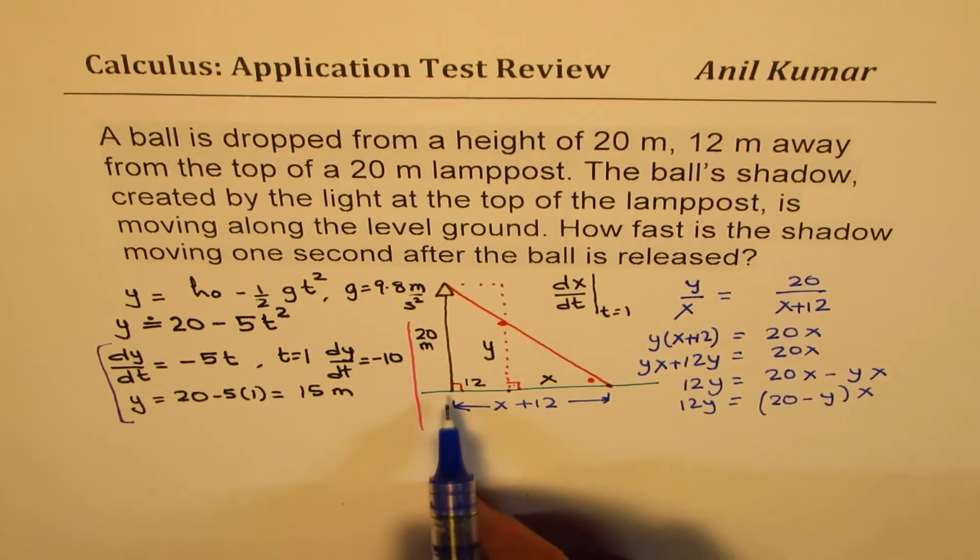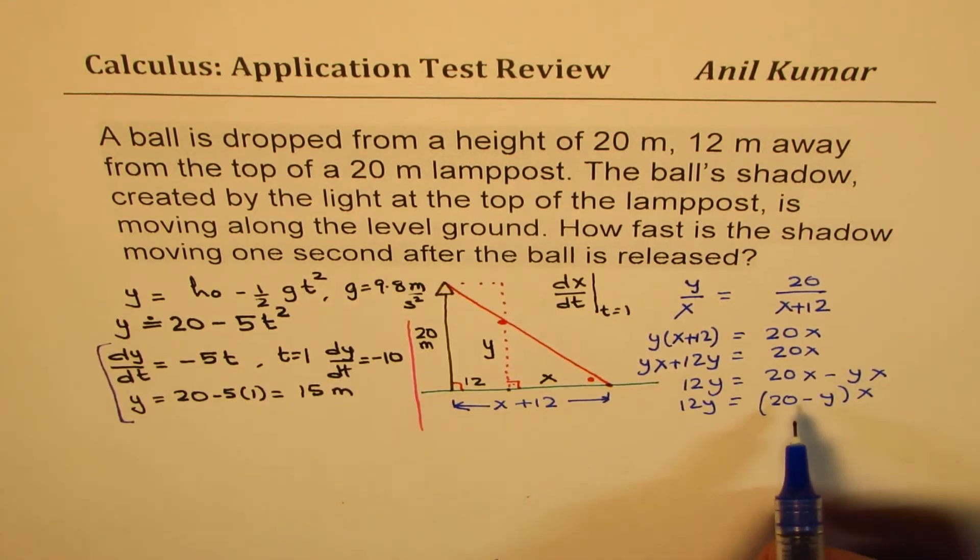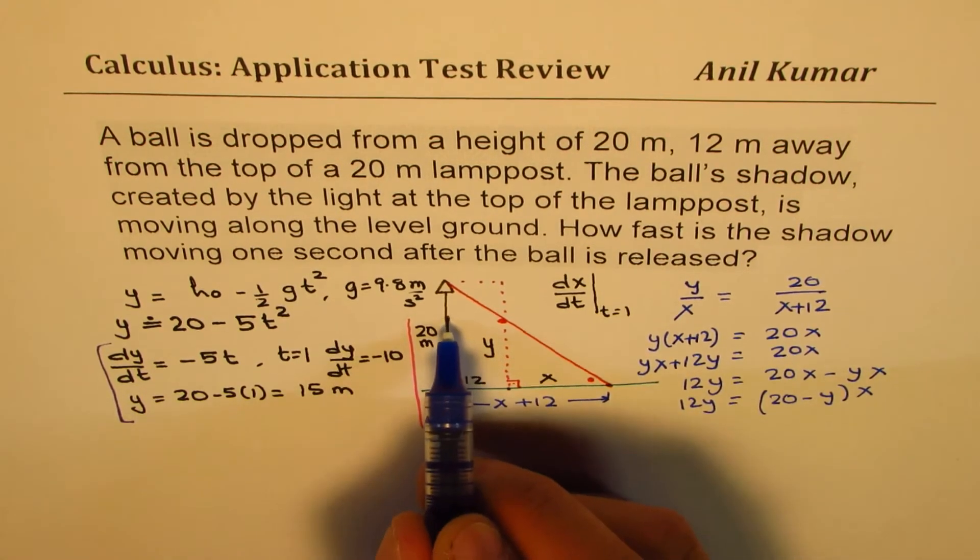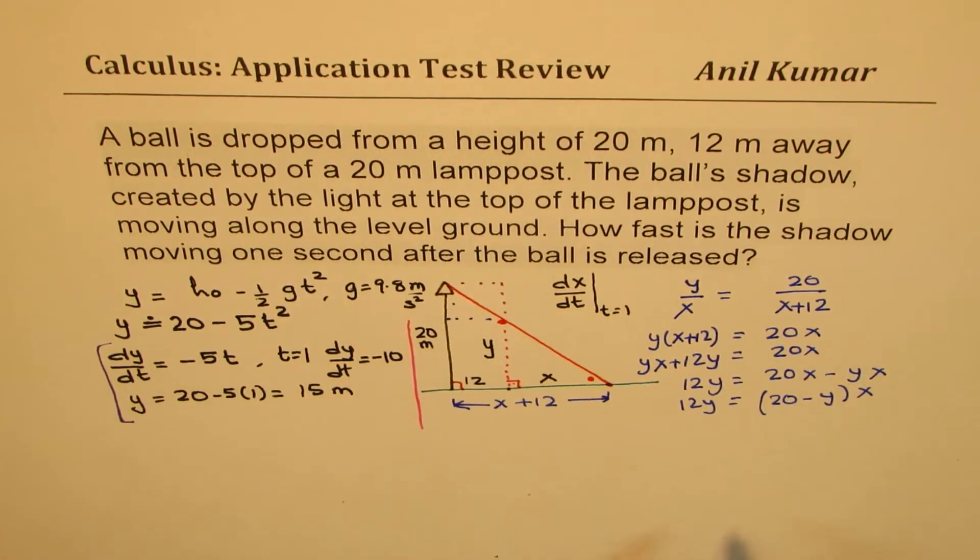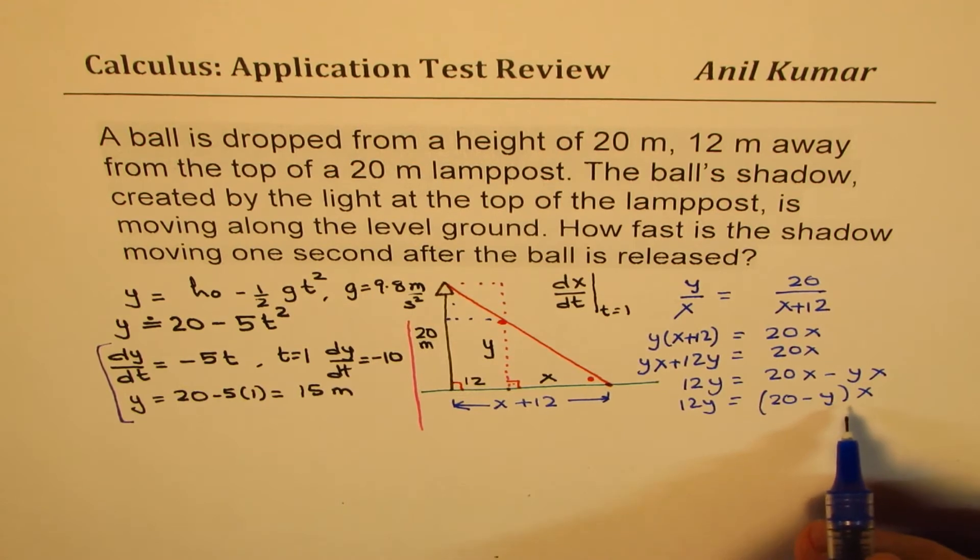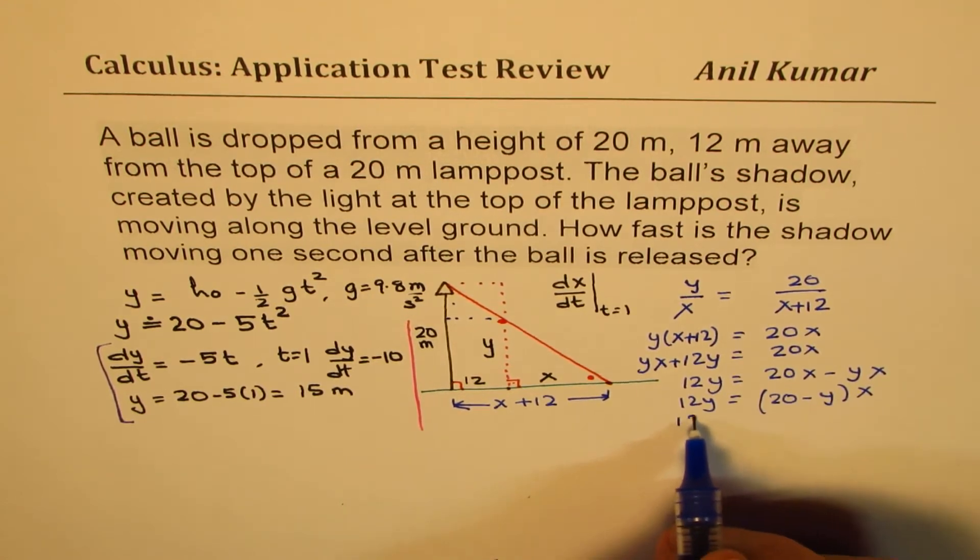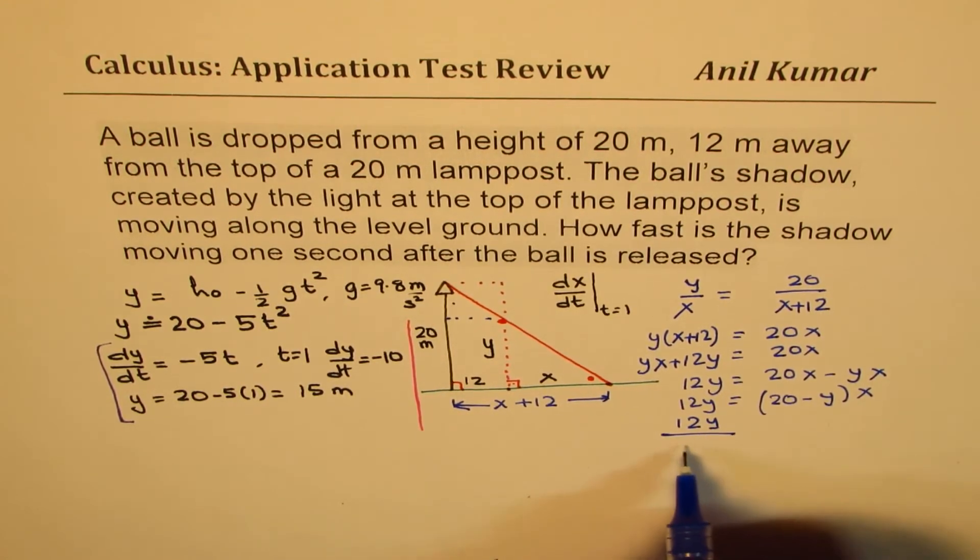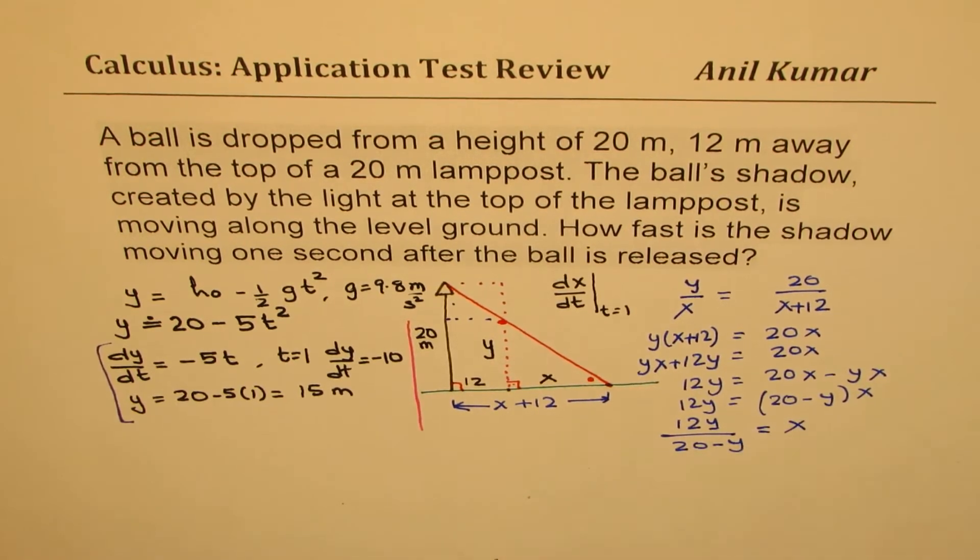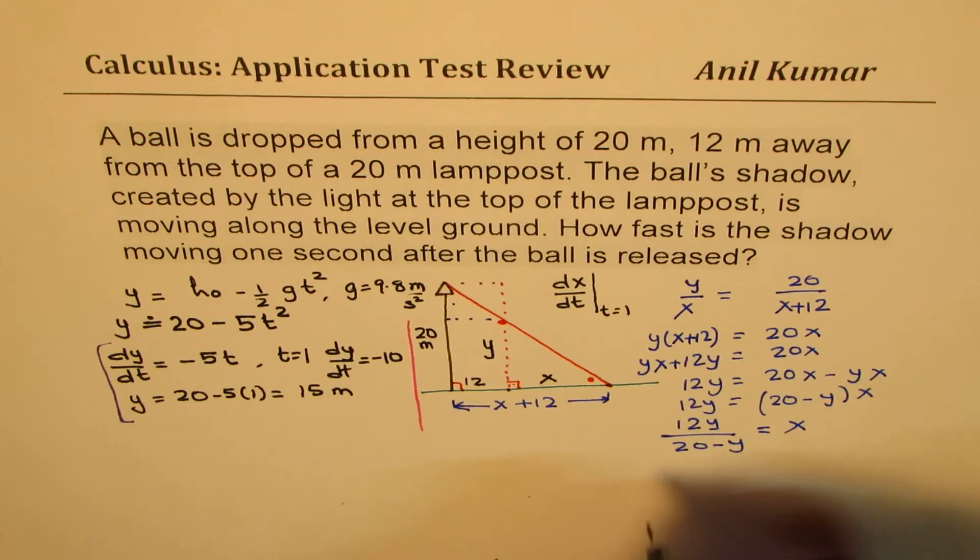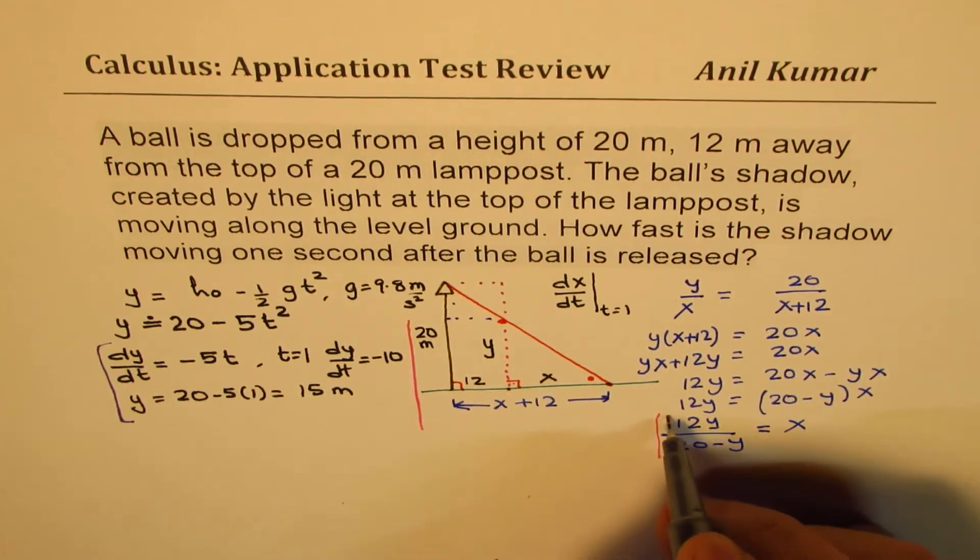So 12 is that distance, do you see that? And 20 minus y is this length. So that gives you what x is. So 12y over (20 minus y) is indeed equal to x. So that's a very important relation which we have got here.